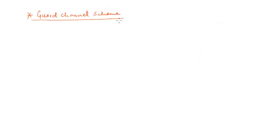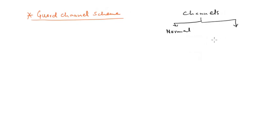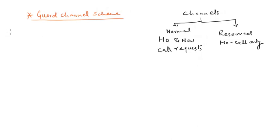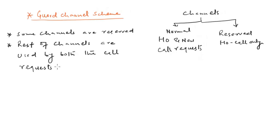The next scheme is the guard channel scheme. In this scheme, the total channels are divided into two groups. One group contains normal channels, whereas the other group contains some reserved channels. These reserved channels are reserved for handoff calls only, and the rest of the channels are used by both handoff calls as well as new call requests.